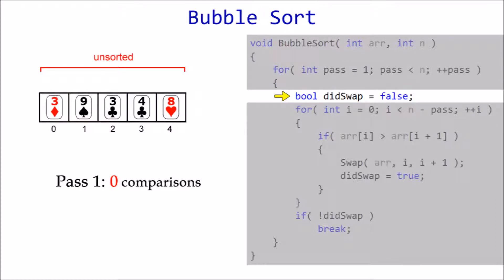Next, we declare a boolean variable to keep track of whether at least one swap takes place during this pass or not. In the inner loop, i represents the current index, and i plus one represents the next index.